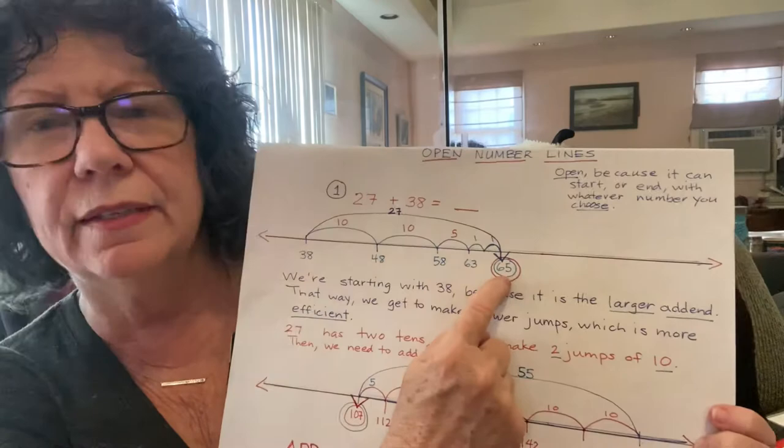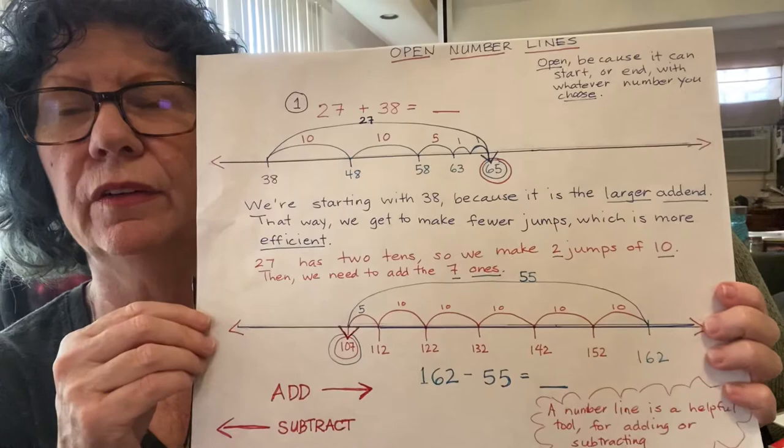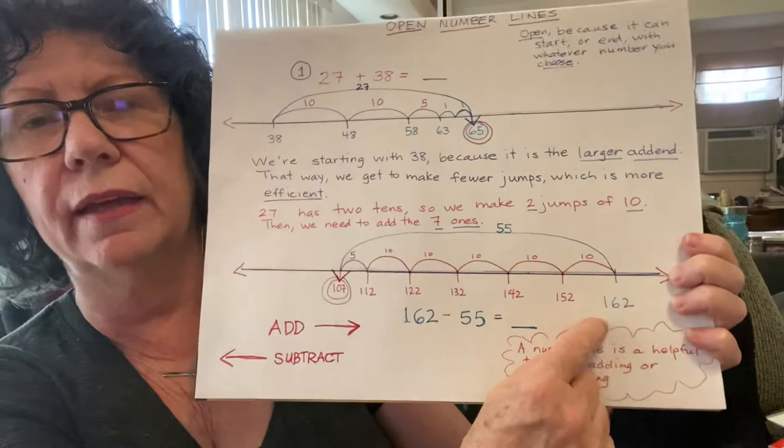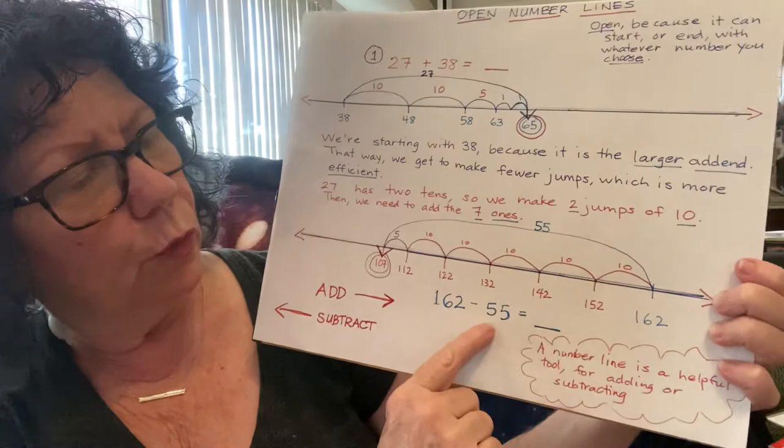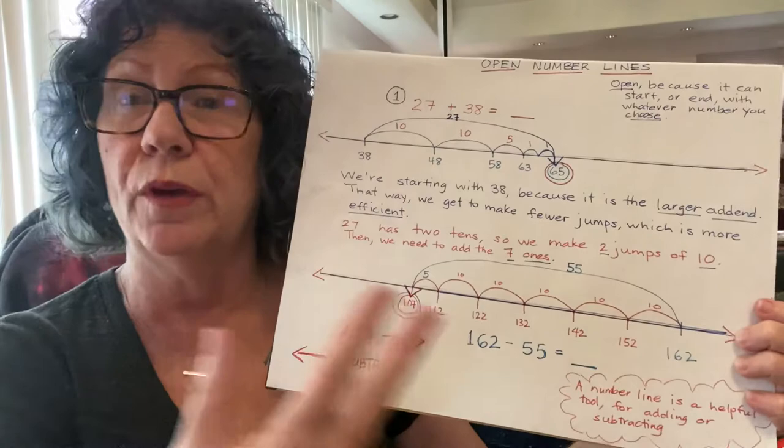Now, the next number line on here shows a subtraction item. And for that one, we're starting on this side. We're starting with the larger number. The problem is 162 minus 55. So we start here. We're starting with 162. That's what we have. 55 is what we're going to be taking away or subtracting. So we're going to make five jumps of 10.